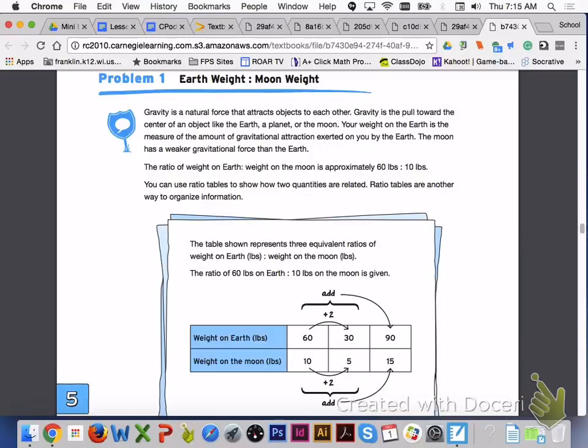Turn to page 342, problem 1, earth weight to moon weight. Gravity is a natural force that attracts objects to each other. Gravity is the pull toward the center of an object like the earth, a planet, or the moon. Your weight on the earth is the measure of the amount of gravitational attraction exerted on you by the earth.